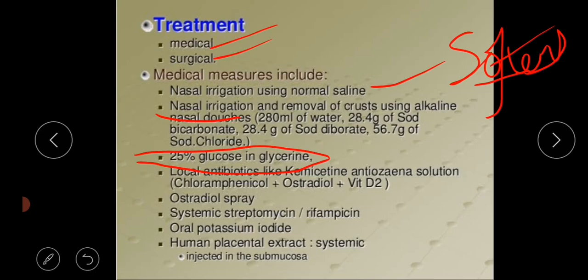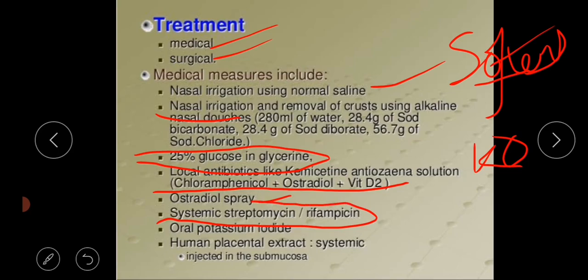Local antibiotics — specifically an anti-ozena solution containing chloramphenicol and estradiol plus vitamin D2 — are given. This antibiotic combination along with estradiol and vitamin D leads to destruction of Klebsiella ozaenae. Estradiol spray can also be used, as some think primary atrophic rhinitis is due to hormonal imbalances. Systemic streptomycin and rifampicin can be used, and oral potassium iodide can be given. Human placental extract injected into the submucosa is also shown to help treat and prevent atrophic rhinitis.